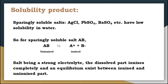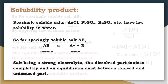Coming to solubility product — some ionic compounds like silver chloride, lead sulfate, and barium sulfate have very low solubility in water. Such salts are called sparingly soluble salts. Consider a sparingly soluble salt AB dissolved in water in a very small quantity. Whatever amount dissolves, it dissociates completely as a strong electrolyte, and an equilibrium exists between the ionized and unionized parts: AB ⇌ A⁺ + B⁻. By applying the law of mass action, the equilibrium constant K = [A⁺][B⁻] / [AB], where square brackets indicate molar concentrations as active masses.